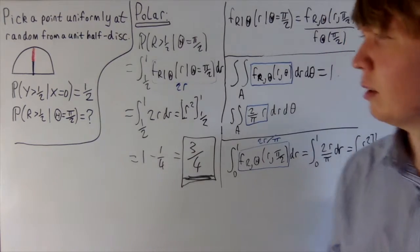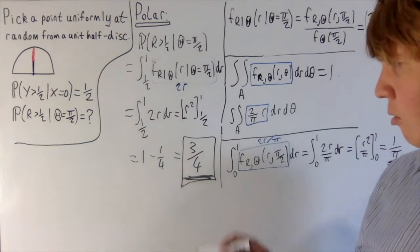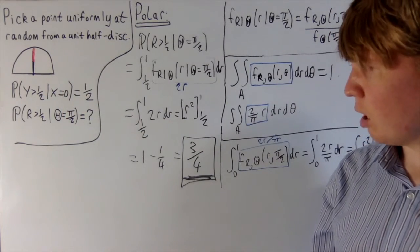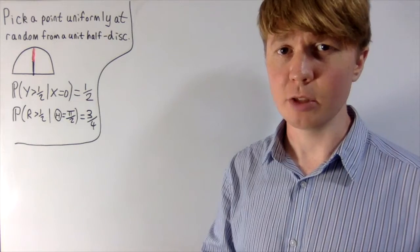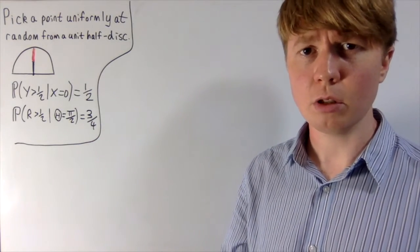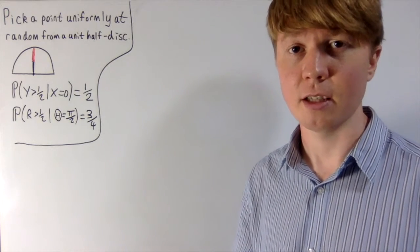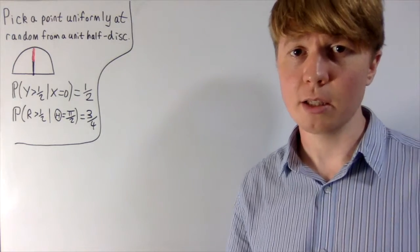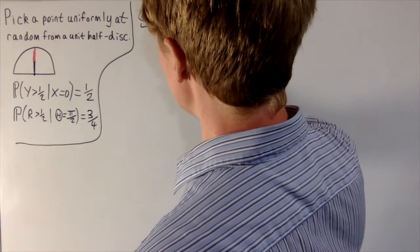This is really surprising. Using Cartesian coordinates, we got a probability of one half of being in the top half of the line conditional on that line. But using polar coordinates for the exact same calculation, the conditional probability of being in the top half is three quarters. We seem to have two conditional probabilities for what appear to be the same conditional events — yet we get different answers. What's gone wrong? It turns out we haven't made any calculation errors; the issue is the assumption that these two events are actually the same thing, because they're not quite.